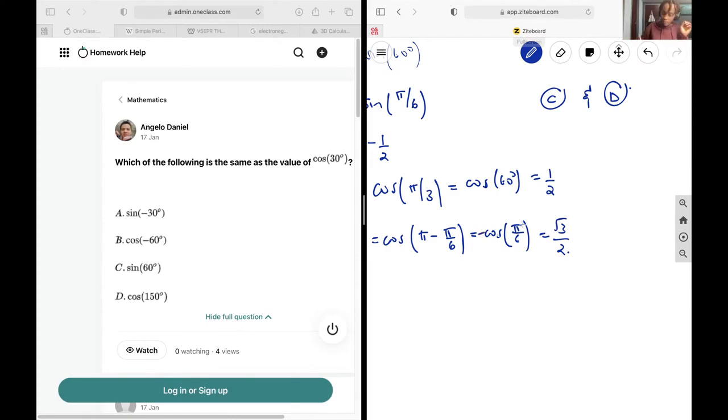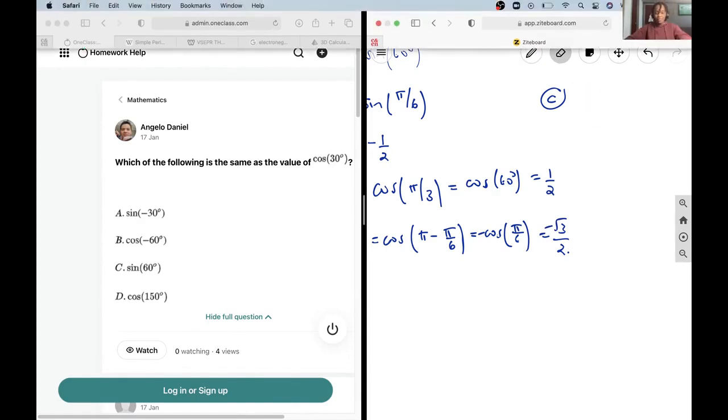Sorry, it's going to be equal to the negative cos pi over 6, which is negative root 3 over 2. So it's only going to be c. That's a valid answer. My apologies over that.